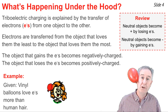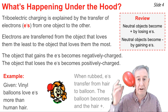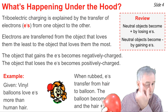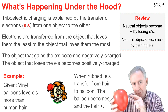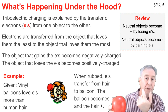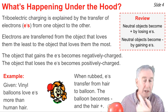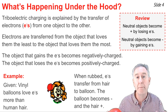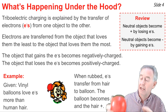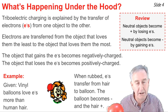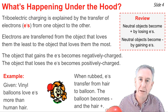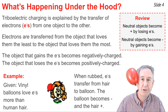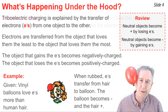So when you rub these two materials together, there's a transfer of electrons from the human ear to the vinyl balloon. The result is, since the human ear has lost electrons, it becomes charged positively, and since the vinyl has gained electrons, it becomes charged negatively, and when you're done, the two objects attract.